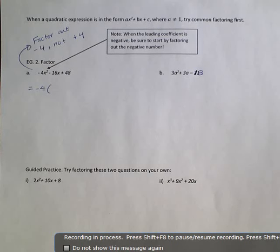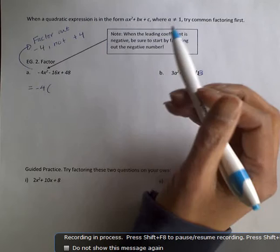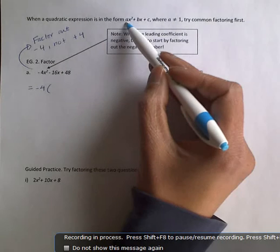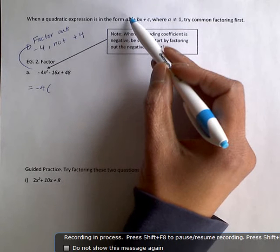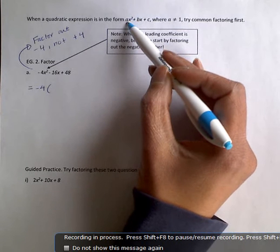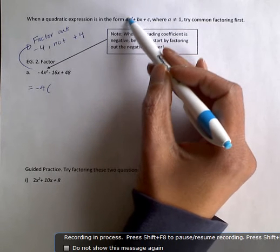So in the next part of this lesson, we're going to factor quadratic expressions in the form ax squared plus bx plus c. However, this time a is not going to be 1, so you'll see a number in front of the x squared instead of the invisible one that was in the last question.